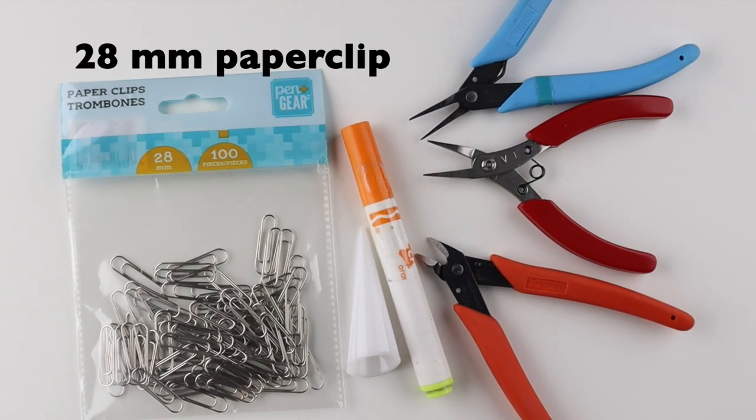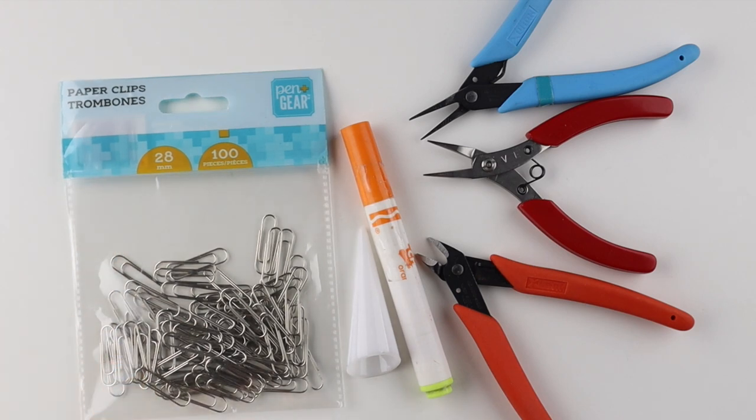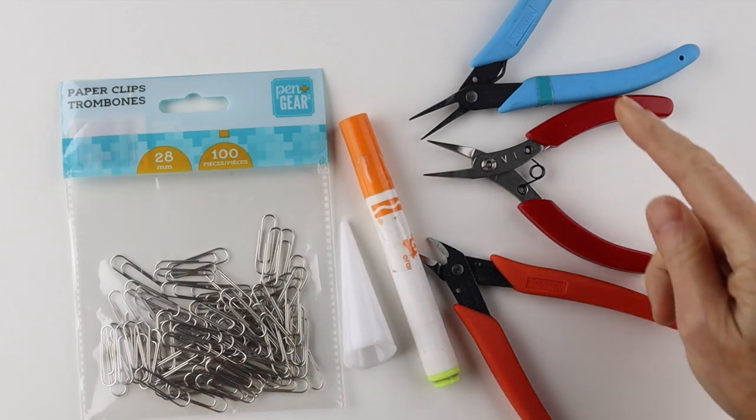For the paperclip rings, I use the 28 mm regular size paperclip. You need a round form, so a marker or a ring cone, and your tools.